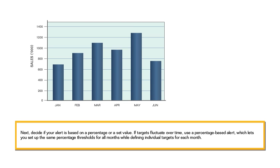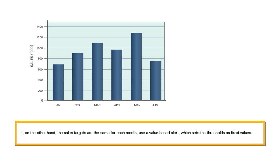If targets fluctuate over time, use a percentage-based alert, which lets you set up the same percentage thresholds for all months, while defining individual targets for each month. If the sales targets are the same for each month, use a value-based alert, which sets the thresholds as fixed values.